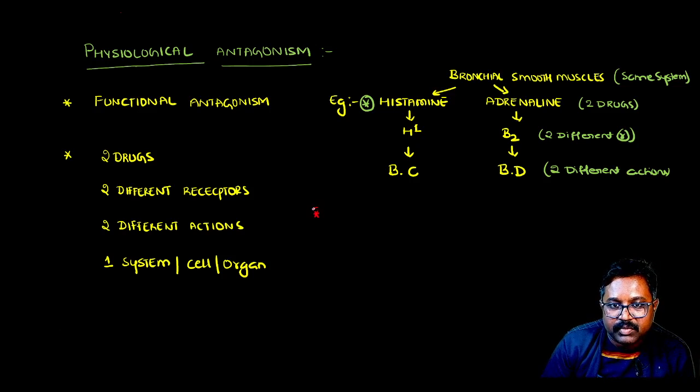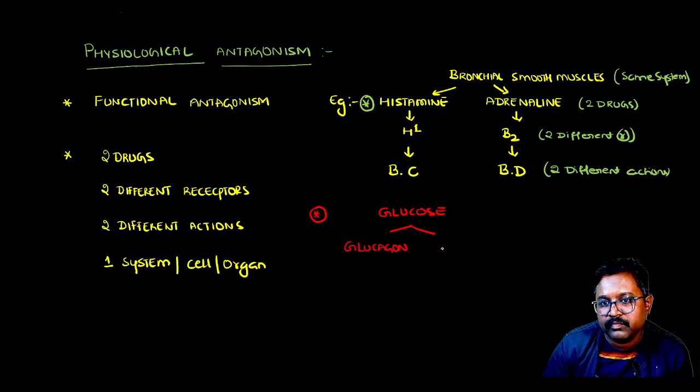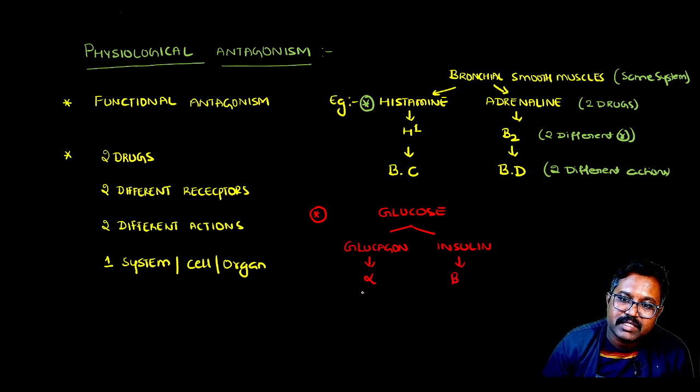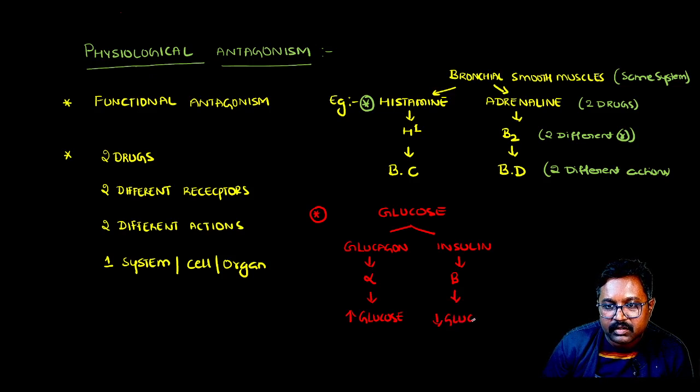The second classical example you should remember is with respect to glucose. Glucagon and insulin act on alpha cells and beta pancreatic cells respectively. They produce increases in glucose and decrease in glucose respectively.